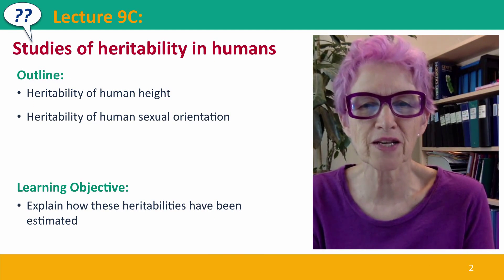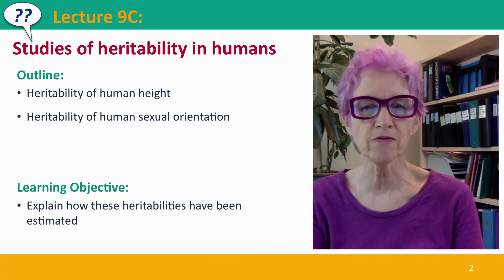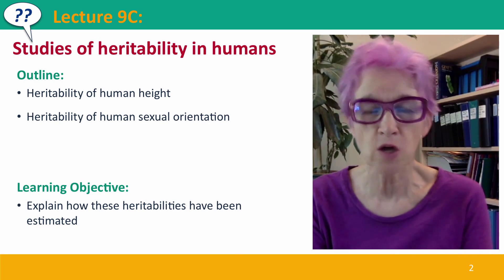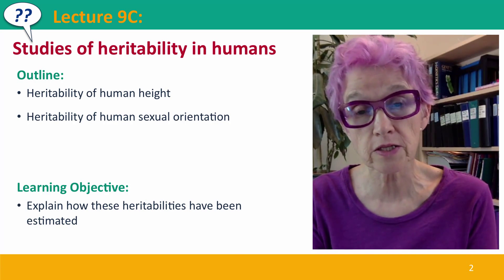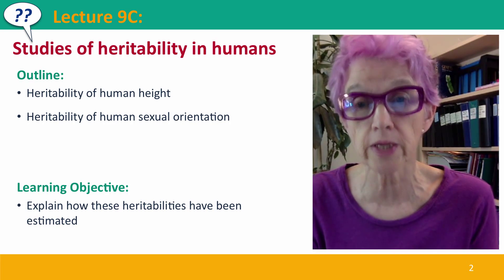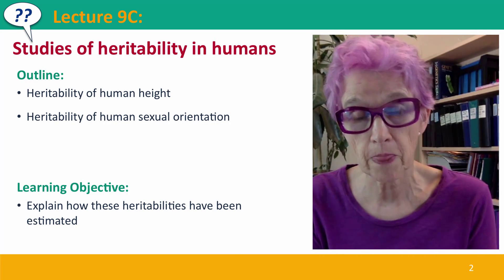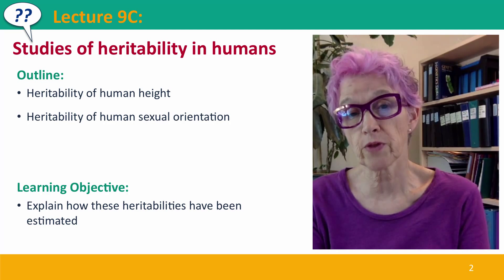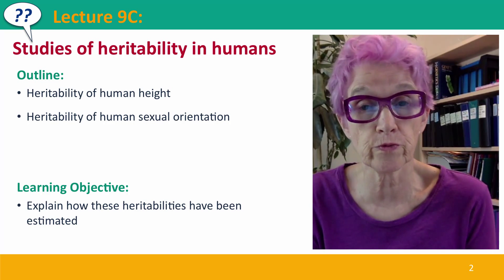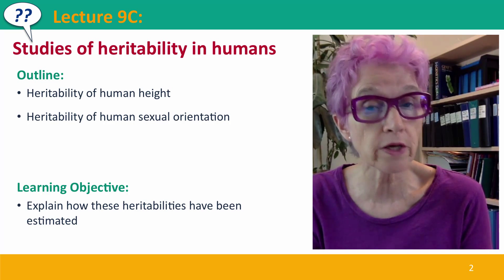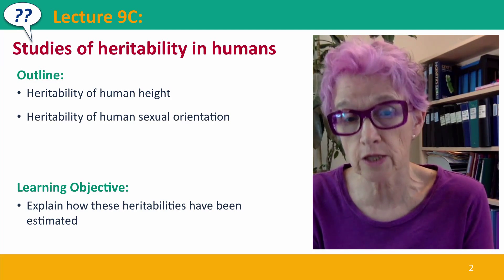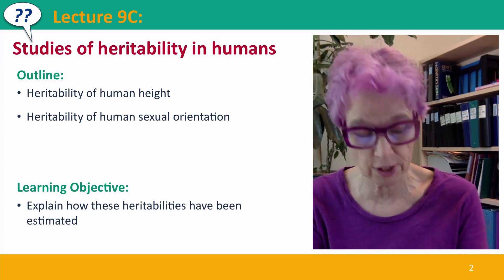Hi everyone. Welcome to Lecture 9 of Useful Genetics, where we're going to review a couple of studies of heritability in humans. We're going to talk about the heritability of human height and the heritability of human sexual orientation.